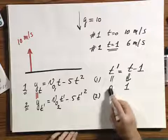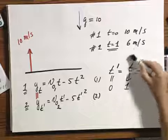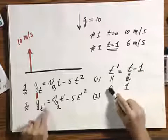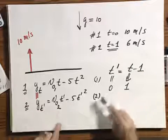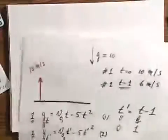And that's exactly what you want, because when this object has already moved one second, this object starts at that moment. So the t prime is t minus one. Once you recognize that, you're well on your way.